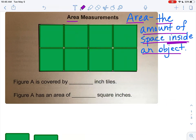So how are we going to figure out the amount of space inside? We're just going to count our tiles. So I have one, two, three, four, five, six, seven, eight.